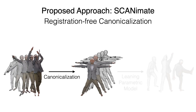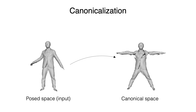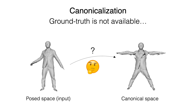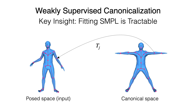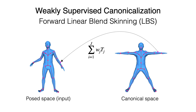Let's take a closer look at canonicalization. For canonicalization, we need to obtain a mapping from the input scans to the canonical space. Unfortunately, this mapping is not known a priori. Our key insight is that fitting SMPL to scans is more tractable than surface registration. By leveraging a fitted SMPL, we can formulate a weakly supervised framework. We know the transformation T_j for each joint of the fitted SMPL model. Similarly, we can transform arbitrary surface points to pose space by linearly blending joint transformations with skinning weights w. This process is called forward linear blend skinning (LBS).